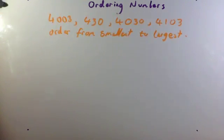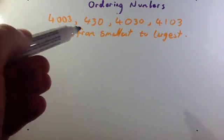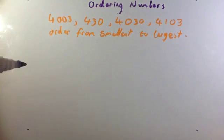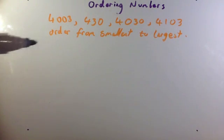So here's a typical question. You've got 4,003, 430, 4,030, 4,103. And the question says, order the numbers from smallest to largest. Whenever you want to order numbers, I would strongly recommend considering place value.